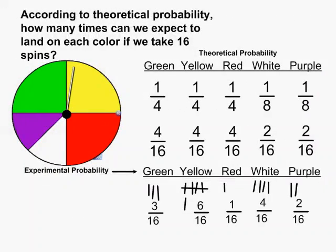Now let's compare the experimental probability to the theoretical probability. For green, it actually occurred one time less than what we expected. For yellow, it occurred two more times than expected — we expected four, and we got six. For red, we expected it four times, but it only occurred one time. For white, we expected it twice, but it happened four times. And for purple, we expected it twice according to theoretical probability, and it actually happened twice — so purple is the only color where the experimental matched the theoretical.